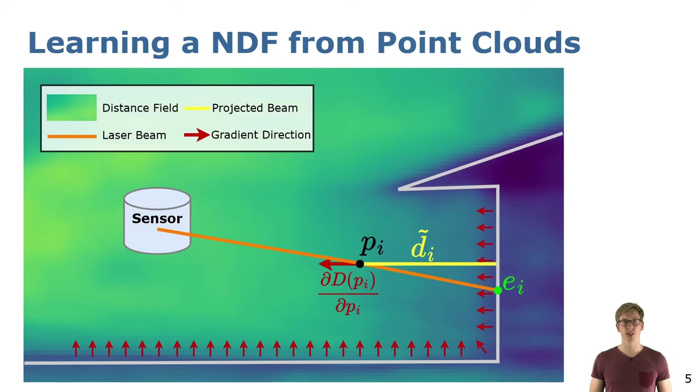For constructing the map, we exploit directly the measurement process of the LiDAR. The sensor is measuring the distance from its origin to the surface. We can sample points along the ray and enforce the network to predict always the distance to the closest surface by using the gradient of the field. After training, we can query an arbitrary location where the network provides us with a distance to the closest surface.